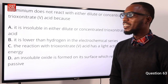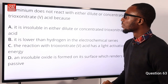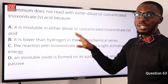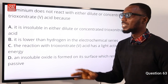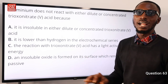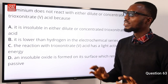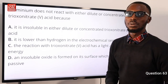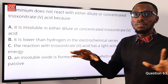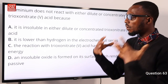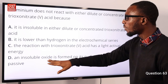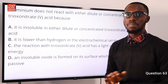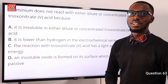Question 63: Aluminum does not react with either dilute or concentrated nitric acid because it forms an impervious layer of aluminum oxide on its surface, which renders it passive. This insoluble oxide prevents further reaction. Option D is correct.